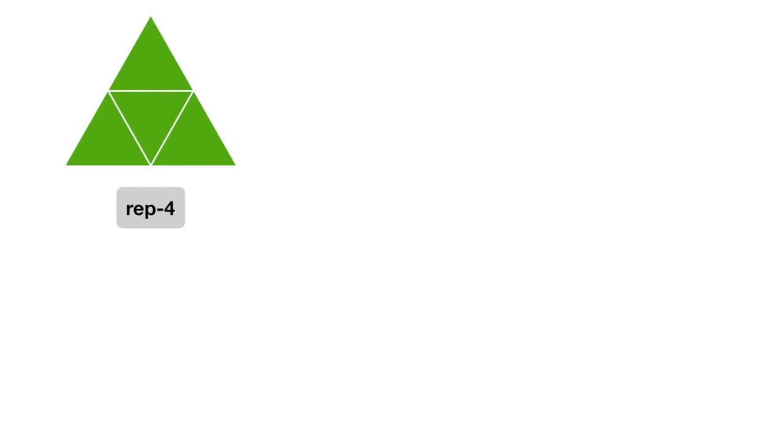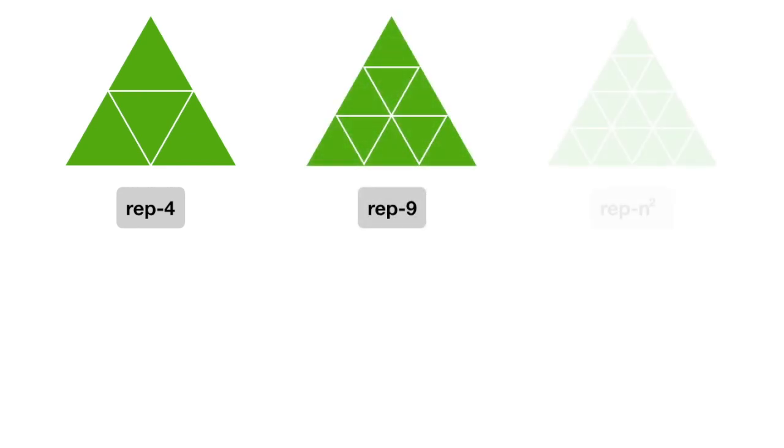I was surprised to find that triangles have the same property. They can be divided into four, nine, sixteen, or any square number of parts. Even if the triangles are irregular. Also, don't these look like artichokes?